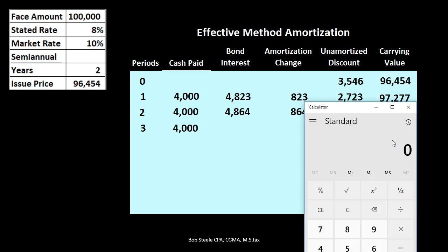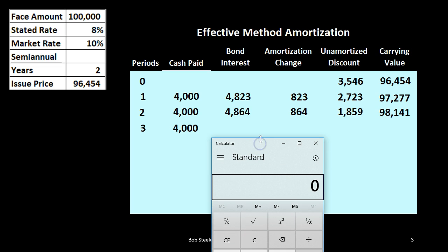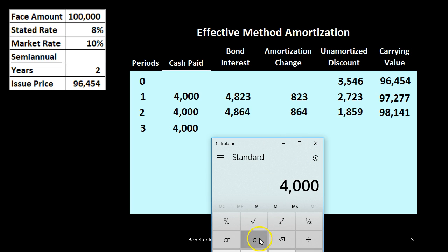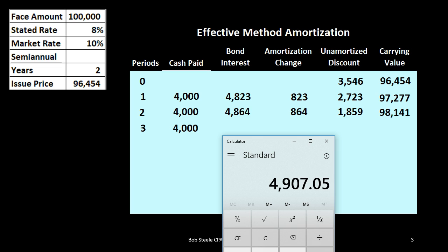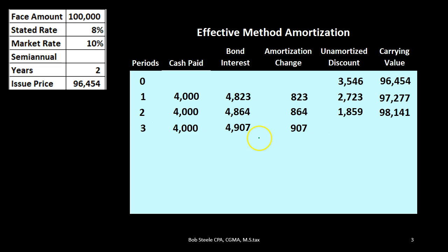For period three, cash is again $100,000 times 0.08 divided by 2, giving $4,000. The bond interest is $98,141 times the market rate divided by 2, giving $4,907. The difference between those two is $907. Taking the unamortized discount minus $907 gives us $952.